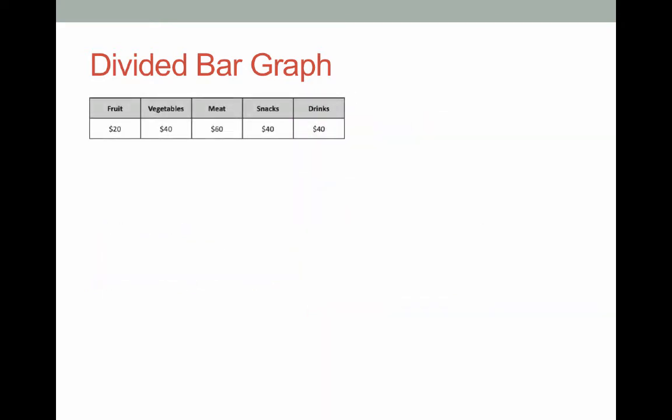Here we have a table with some collected information. It's the costs of some fruits and meats and drinks and we're going to put that into a divided bar graph. To start off with you work out the total of the costs or the total of the numbers of the scores that you're looking at. In this case it's $200.